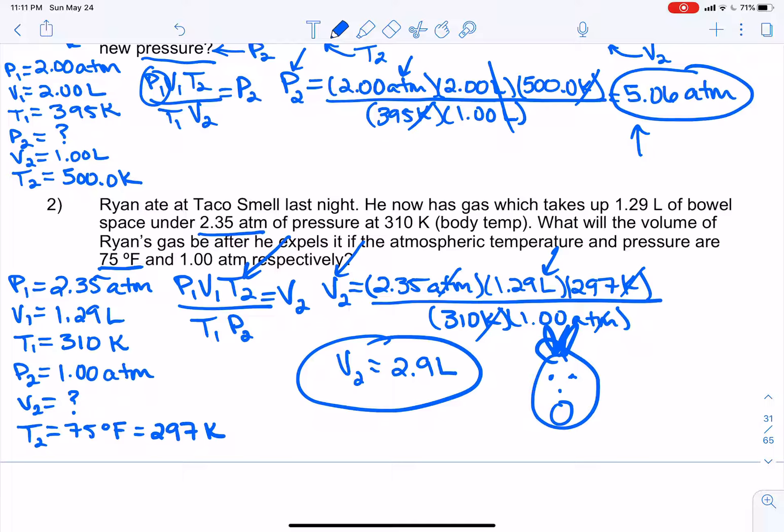Now notice, you guys, I did two sig figs. And the reason is because 310, we don't know if that zero on the end is significant or not. So we have to go with it's not significant. If I wanted it to be significant, I'd have to write it in scientific notation or put a decimal point to the right of the zero. But the decimal point wasn't there, so we went with two sig figs.